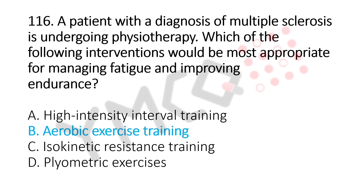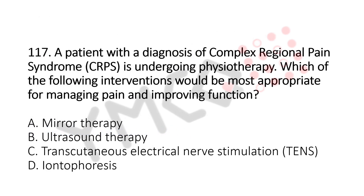Now let's move to question number 117. A patient with a diagnosis of complex regional pain syndrome is undergoing physiotherapy. Which of the following interventions would be the most appropriate for managing pain and improving function? Option A, mirror therapy. Option B, ultrasound therapy. Option C, transcutaneous electrical nerve stimulation. Option D, iontophoresis. And the answer is Option A, mirror therapy.